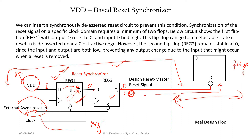If the reset deassertion has taken place, then at the active clock edge, the D input will be propagated to the flip-flop output. In the first clock edge, flip-flop one output becomes one, but flip-flop two output is still zero because its input was zero at that first clock edge. Let's look at the waveform — this is our clock signal and this is our reset deassertion. This is active-low reset, so deassertion happens like this.